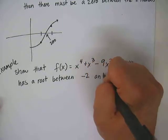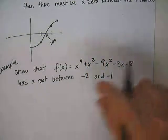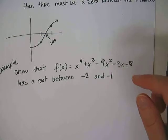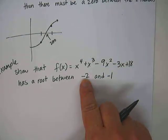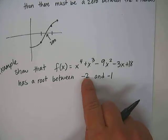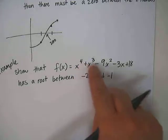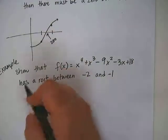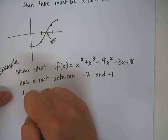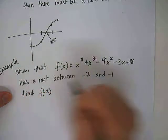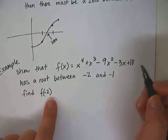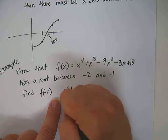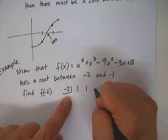So earlier when we learned the remainder theorem, we learned that we can either do synthetic division and get the remainder as the answer we're looking for, or we can actually take this negative 2 and plug it into this function to find the answer. So we want to find f of negative 2, either by plugging it in or using synthetic division. I'm going to use synthetic division because I like that better.